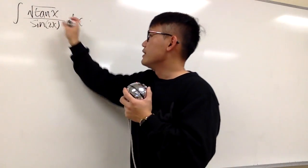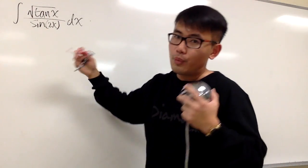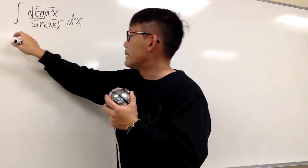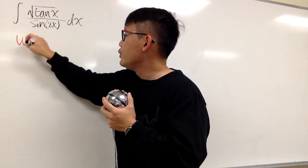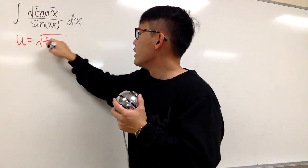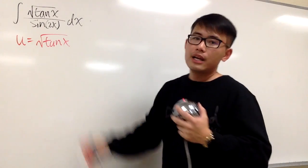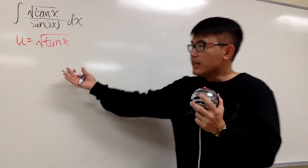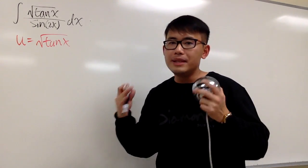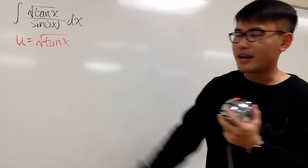So the integral is square root of tangent x over sine of 2x. He suggests that we can also use u-substitution — let u equal to square root of tangent x. It's not so obvious why we let u equal to that, but let me tell you, it's going to work out perfectly.